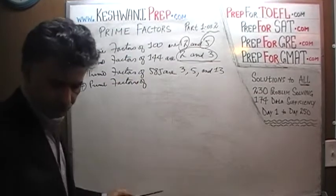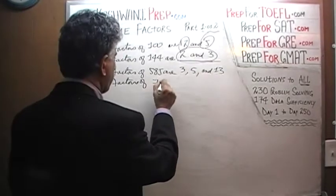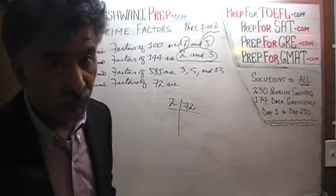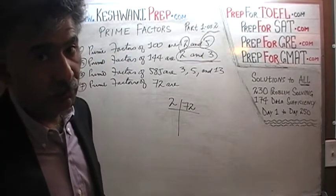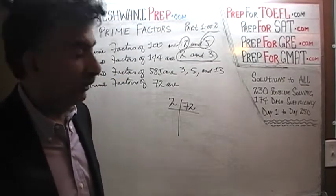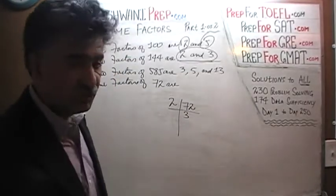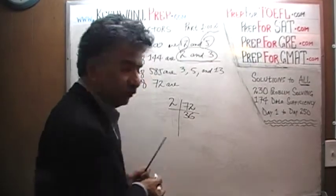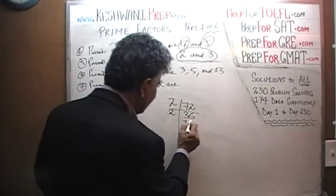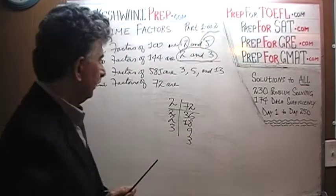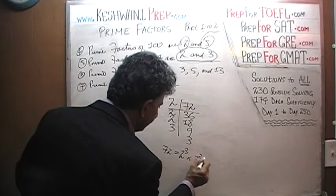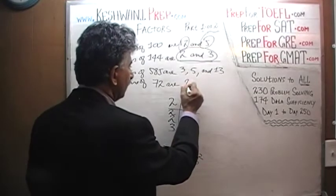Prime factors of 72. 72 is an even number, so we divide by 2 — even though 72 is also divisible by 3, since 7 plus 2 is 9 and 9 is divisible by 3. We must divide by the lowest prime factor first. How many 2's in 7? 7 has three 2's; the remaining 1 joins the 2 to become 12, and 12 has six 2's. Divide by 2 one more time: 3 has one 2; the remaining 1 joins the 6 to become 16, and 16 has eight 2's. Divide by 2 once more and we get 9. 9 factors into 3 times 3. So 72 equals 2 cubed times 3 squared, and the prime factors of 72 are 2 and 3.